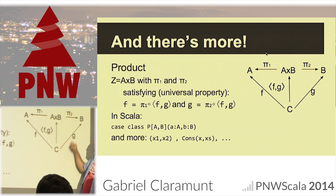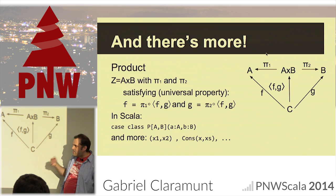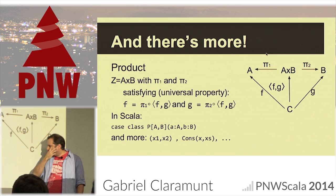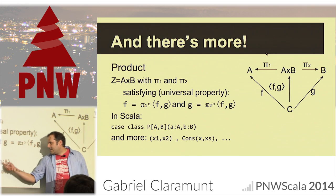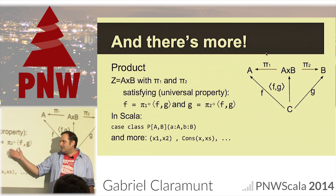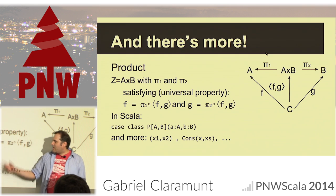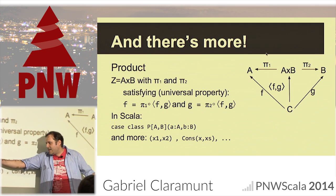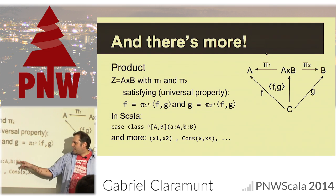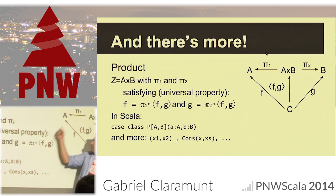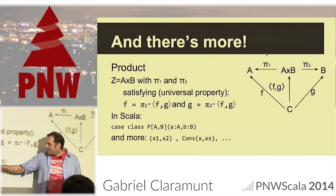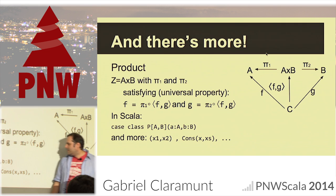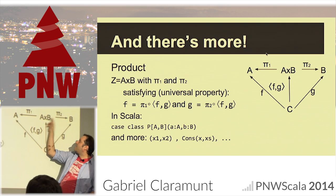That's a totally mathematical construct, but any time you use multiple parameters in a type you're using this — that's why it's called a product. Here, if you have two parameters, it's what we represent with a case class. p.a and p.b are your projections.